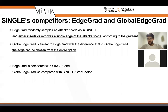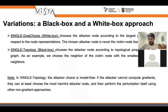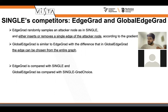Moving to Edge Guard — our competitor attack — which either inserts or removes a single edge, it does so according to the gradient of edges connected to the attacker. In the Global Edge Guard variation, we are no longer limited to the attacker's edges and the edge can be chosen from the entire graph. We compare Edge Guard against Single, and Global Edge Guard against Single Grad Choice, which are both our white box approaches — to see how a single-edge attack and a single-node attack compare.